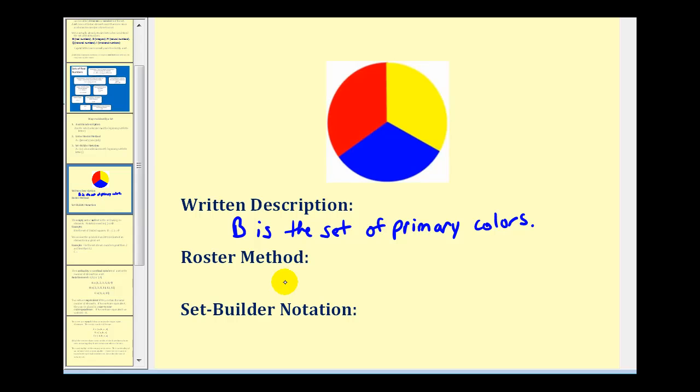Or using the roster method we could say that B equals the set where the colors would be red, blue, and yellow.